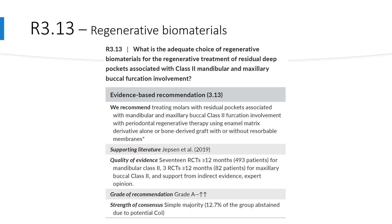The next guideline is about the choice of regenerative biomaterials for class 2 buccal furcation involvement. The authors recommend using EMD alone or bone-derived graft with or without resorbable membranes. The committee gave this a grade of A. Using the Yepsen 2019 paper as supporting evidence — which included 19 RCTs, although the majority were for mandibular buccal furcations — supplemented by indirect evidence with good network consistency and expert opinion, these materials showed to contribute to the regenerative approach in different parameters.